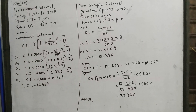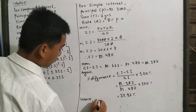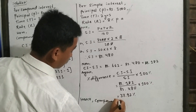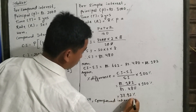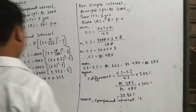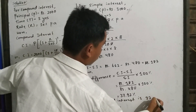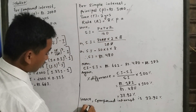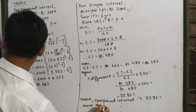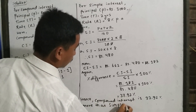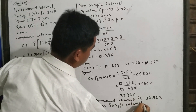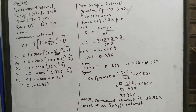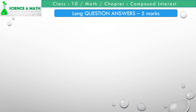Hence, the compound interest is 37.92% more than the simple interest. Question number 2.